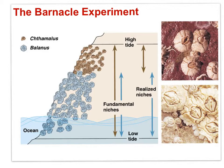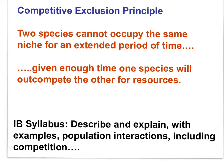The competitive exclusion principle states that two species cannot occupy the same niche for an extended period of time. Given enough time, one species will out-compete the other for resources. In order to survive extreme competition, one of the two species — probably the less competitive one — might evolve, becoming adapted to new conditions at the edges of the niche. By natural selection, the population's genetics change, becoming better adapted to difficult conditions. Over evolutionary time, the niches of the two species separate, such that there would be little competition for resources.